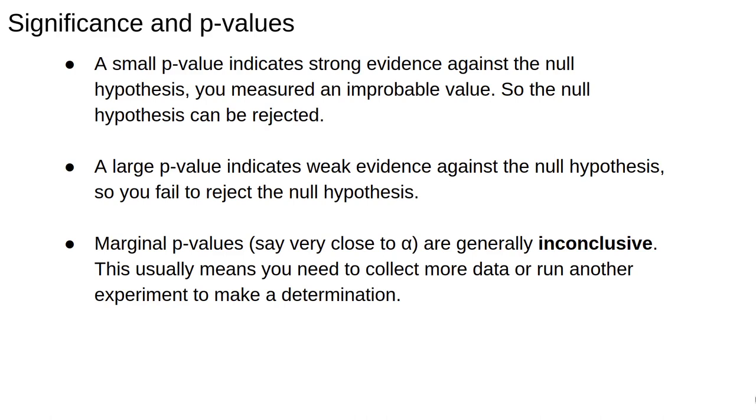Marginal p-values, say values which are very close to the significance threshold, something like 0.049 or 0.051, are generally inconclusive. If possible, collecting more data can help determine which side of the line we're on, but at this stage we run into some of the issues that plague formal hypothesis testing.